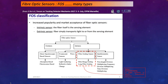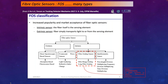Because of the increased popularity and market acceptance of fiber optic sensors, you naturally have different variations of the technology being developed. The two main categories of fiber optic sensors include extrinsic and intrinsic sensors. Intrinsic sensors are where the fiber itself is a sensing element — this includes distributed sensing of the fiber. Extrinsic sensors are where the fiber simply transports light to or from the sensing element. Within the intrinsic category, we have fiber grating sensors, which include fiber Bragg grating and long period grating — the topic of this talk.